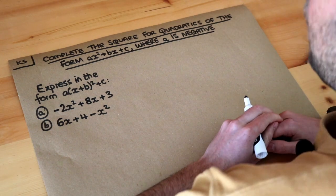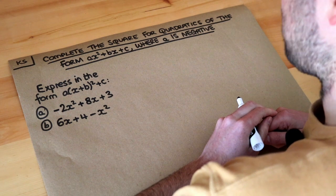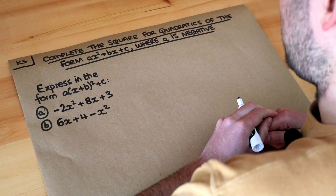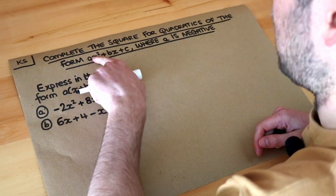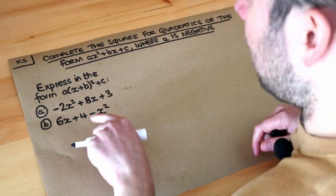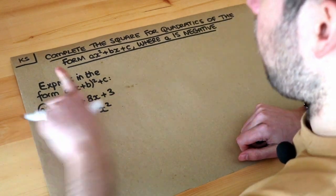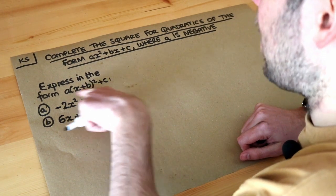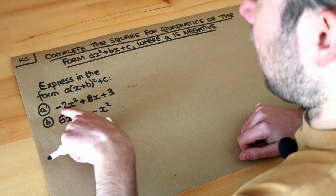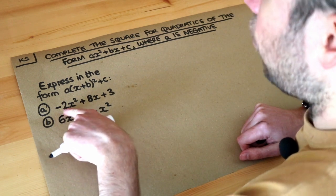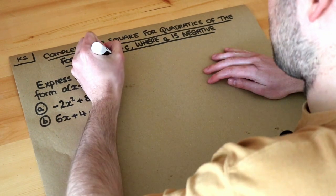Hello and welcome to Dr Ross Mass's key skill video on completing the square for quadratics of the form ax squared plus bx plus c where a is negative. In a previous video we saw how we could complete the square when we had a number in front of the x squared that wasn't 1. The only difference here is that the coefficient of the x squared could be negative, so minus 1 or minus 2. But the method remains exactly the same.